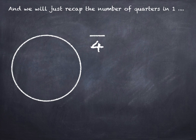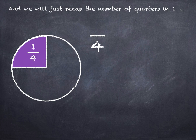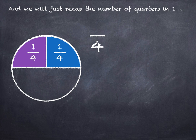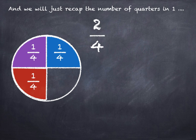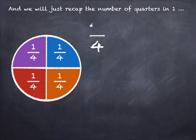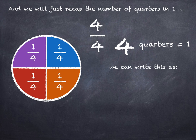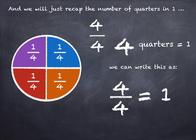And we will just quickly recap the number of quarters in one. One quarter. Two quarters. Three quarters. Four quarters. Four quarters in one, and we can write this as four out of four, or four quarters equals one.